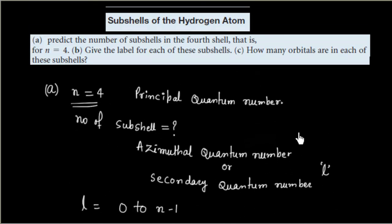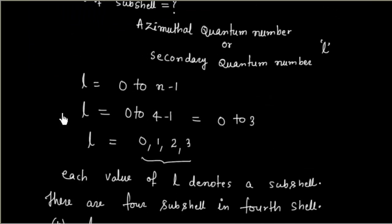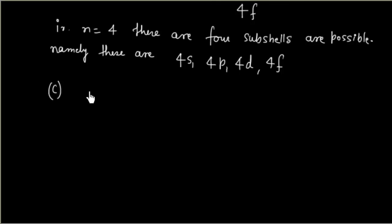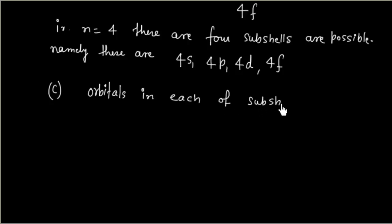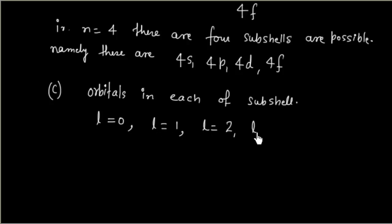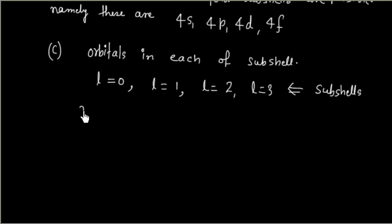The next part, Part C, asks: how many orbitals are in each of these subcells? The number of orbitals is given by the magnetic quantum number ML. So ML will basically give you the number of orbitals.